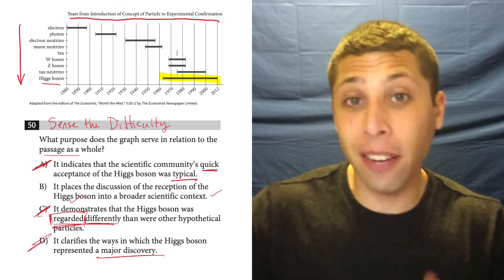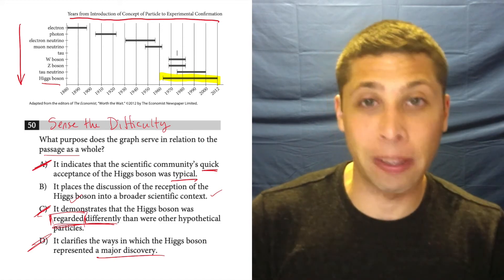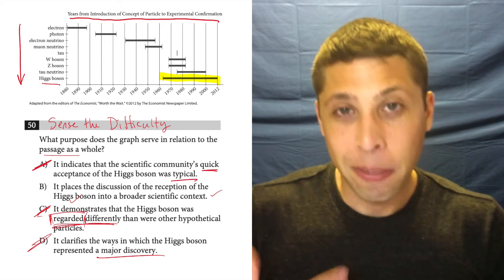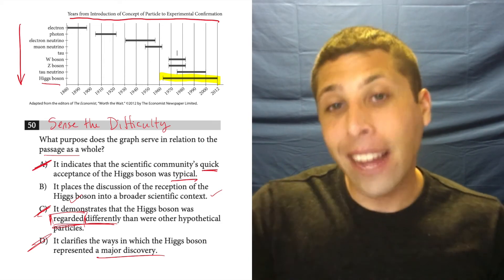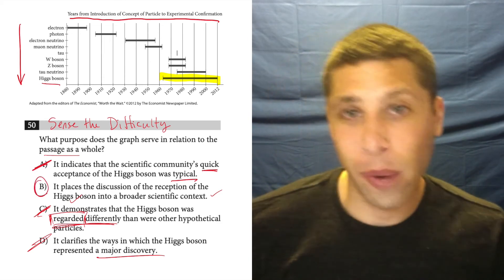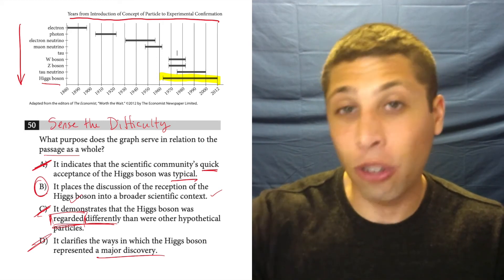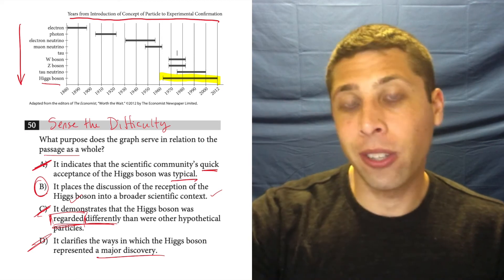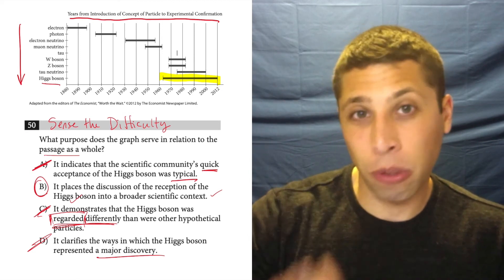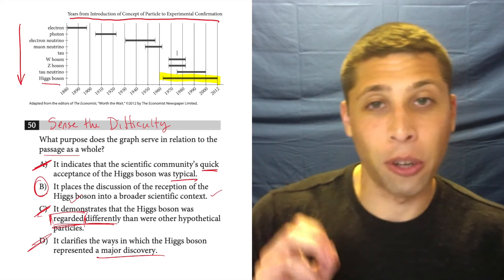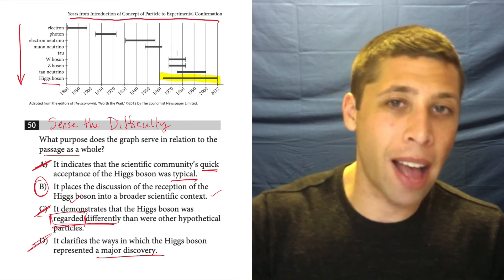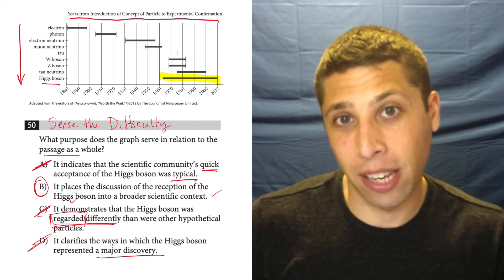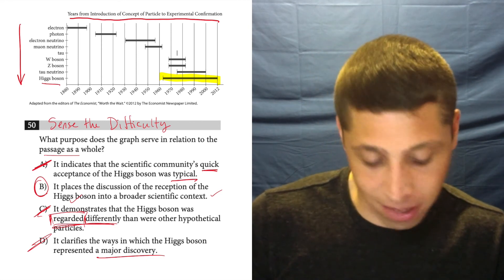Now, in the passage, they definitely talk it up and talk about the Higgs boson quite a bit, making us think that it's a major discovery. But the graph is supposed to say it. And that's why we want to stick to the graph for these questions. If possible, we shouldn't have to look at the passage. Occasionally we will, but most of the time we won't need to. And the graph is supposed to do most of the work. And so if something isn't shown on the graph, it really doesn't matter if it's talked about in the passage. The graph is supposed to say it too.